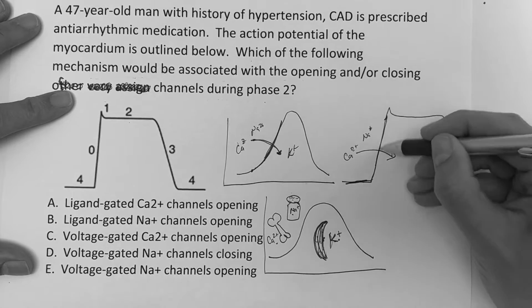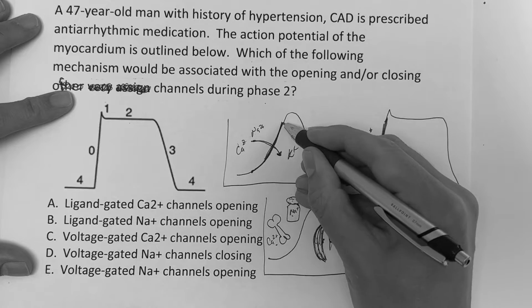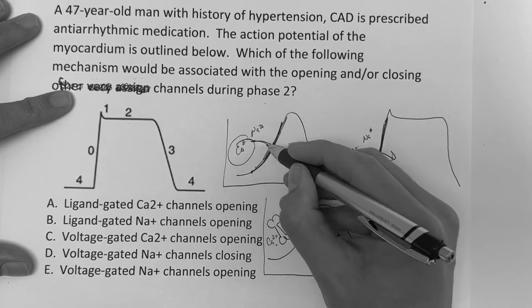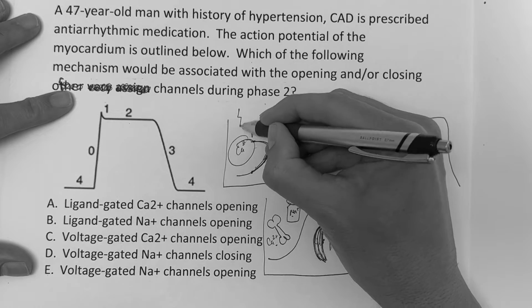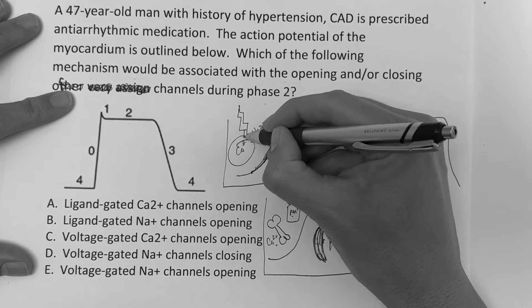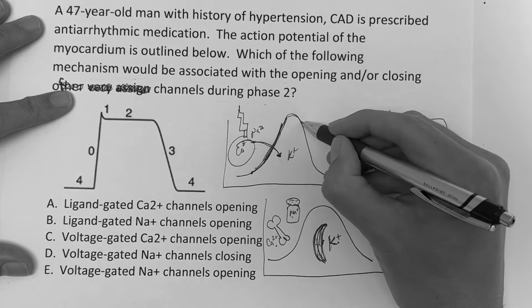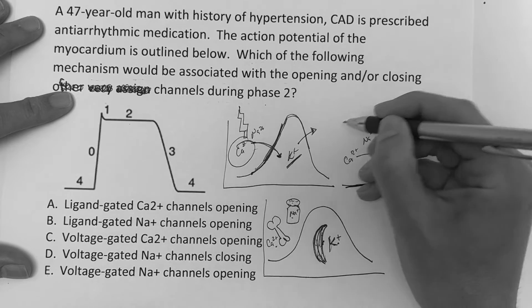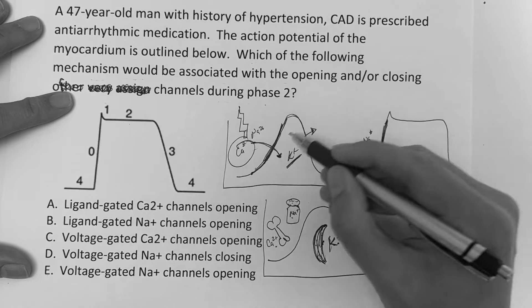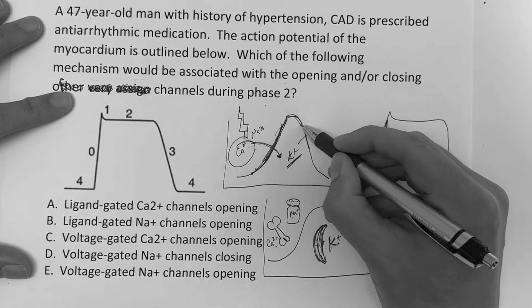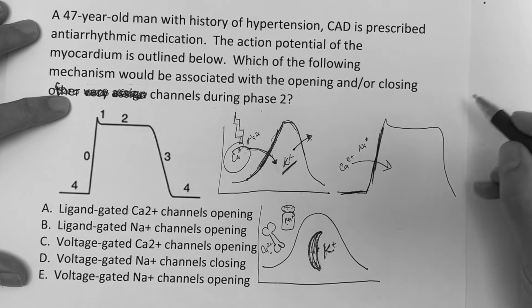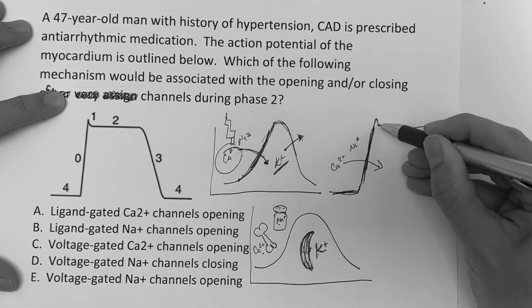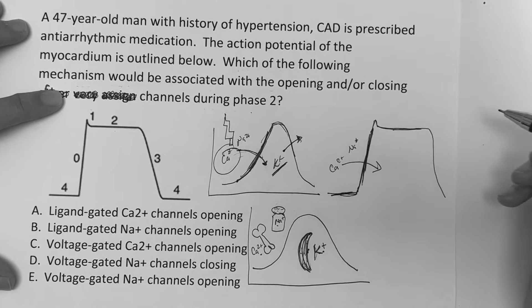When the rise is gradual on the pacemaker cell, think of calcium coming in — put a little lightning bolt, because it's voltage-gated. Then as it comes down, something must be leaving: potassium. So calcium comes in on the pacemaker, and then potassium leaves on the pacemaker.